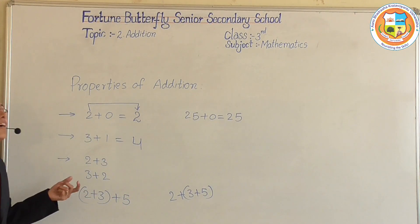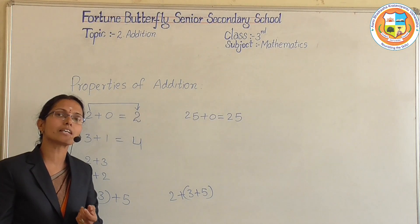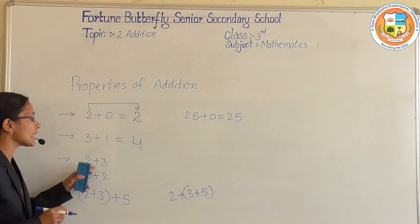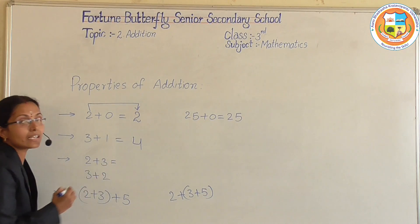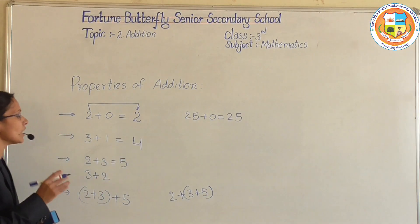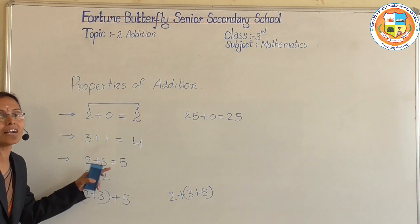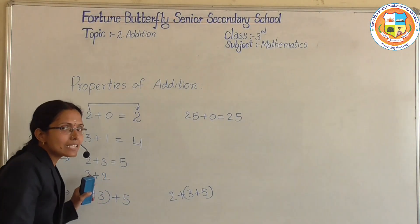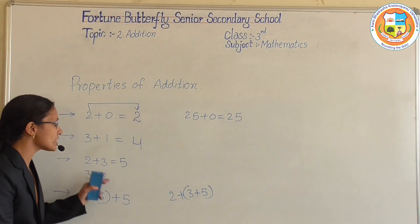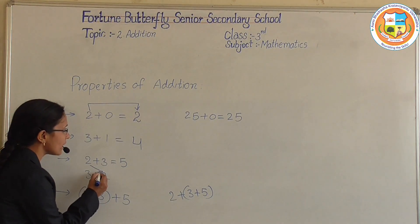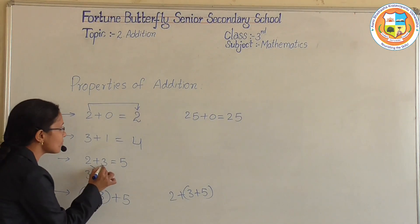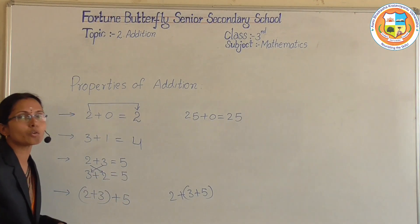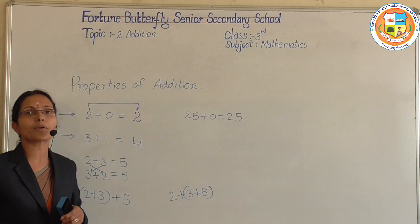The third property is order property. Here I am adding 2 plus 3. The answer is 5. Now I am changing the order — the first number becomes the second, and the second becomes the first. But still the answer is the same. So in addition, the order property is satisfied.